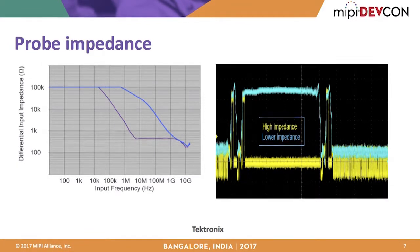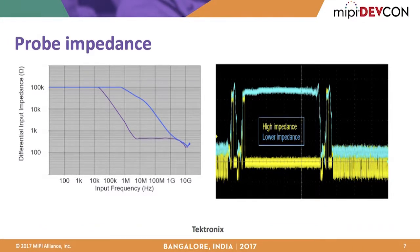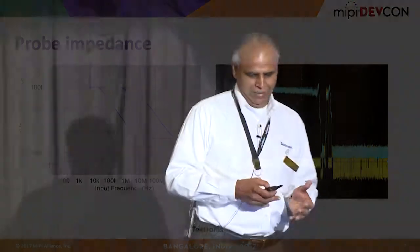D-PHY is very sensitive to probe input capacitance. The receiver's input capacitance ranges from 3 pF up to 20 pF. When probing the transmission line, it is important that the probe capacitance is as low as possible so it does not affect signal integrity.